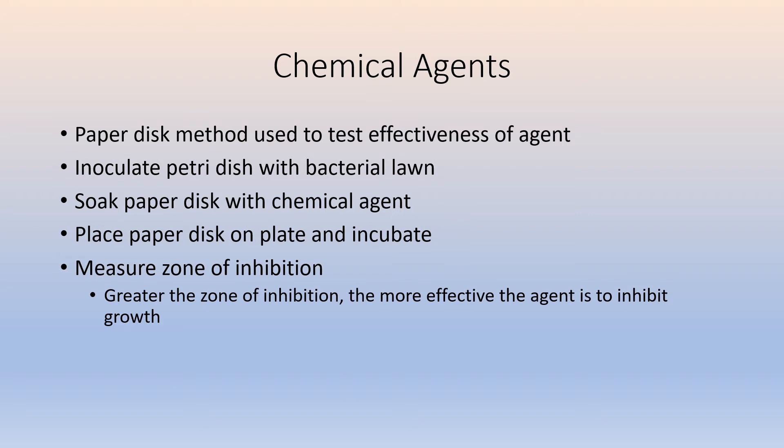This is usually tested by the paper disc method to see how effective a particular agent is. You inoculate the petri dish with a bacterial lawn, then take a paper disc and saturate it completely with whatever chemical you're testing, place that paper disc on the plate, and then incubate it. After incubation of typically 24, maybe 48 hours, you look at the plate with the various discs on them and measure the zone of inhibition.